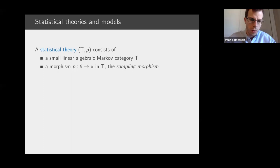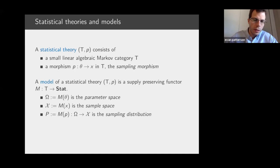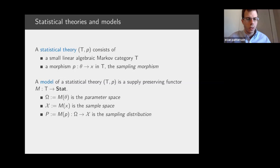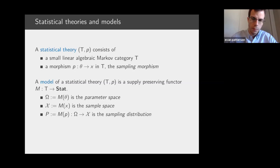So let's move now to talking about statistical theories. A statistical theory consists of a small linear algebraic Markov category, together with a particular morphism within that theory called the sampling morphism. A model of a statistical theory — or a statistical model — is a supply-preserving functor from that category into the category Stat of Markov kernels. In particular, you get a parameter space, a sample space, and a sampling distribution just like in the classical setting, but now with the additional structure of the theory telling us what different pieces are assembled to make that sampling distribution.